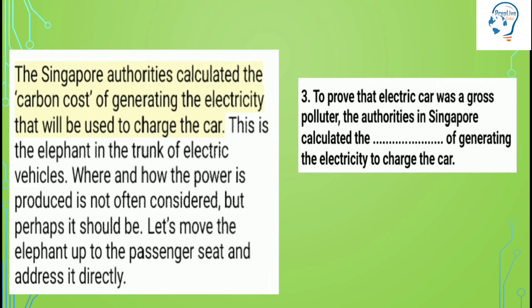Now the question: 'To prove that the electric car was a gross polluter, the authorities in Singapore calculated the [blank] of generating the electricity to charge the car.' My keyword here is what was calculated. So I need to find what the authorities in Singapore calculated — related to generating the electricity to charge the car.